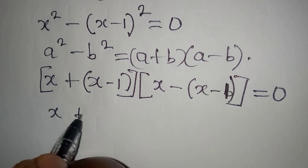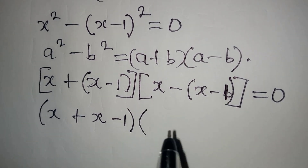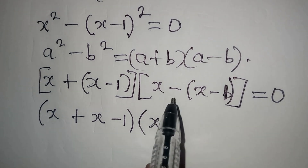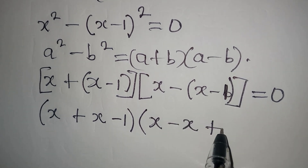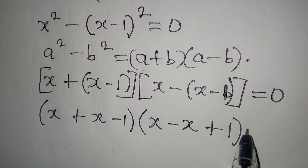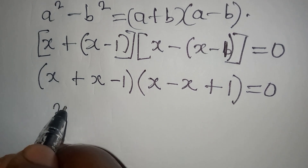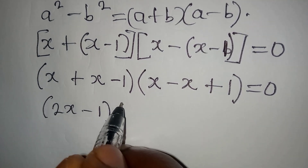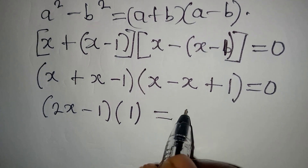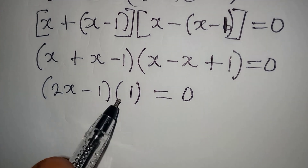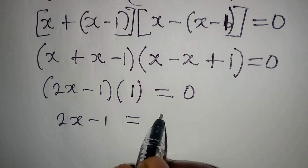Now open the inner brackets. In the first bracket we have x plus x minus 1. In the second bracket: x, then negative times x gives negative x, and negative times negative gives positive 1. So we have (x plus x minus 1)(x minus x plus 1) equals 0. Adding up: the first bracket gives (2x minus 1), and the second bracket simplifies to just 1. So 2x minus 1 equals 0.